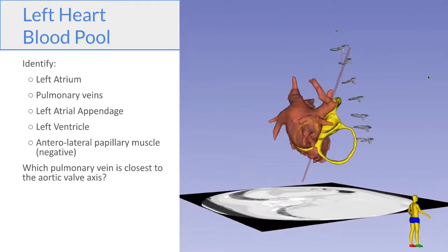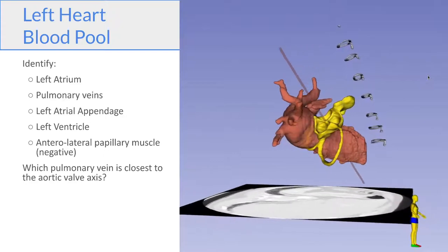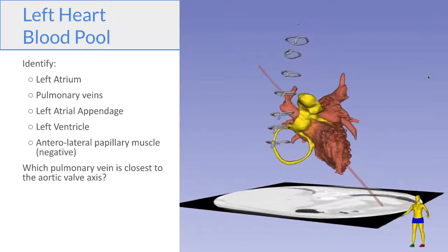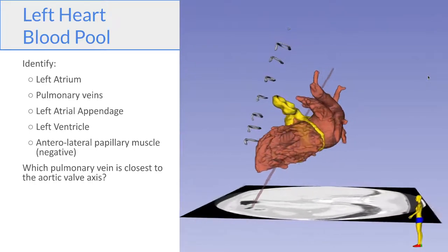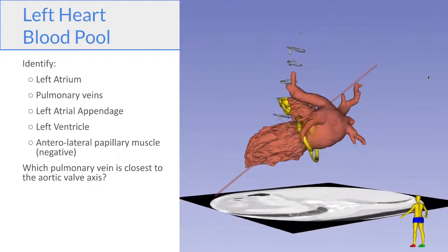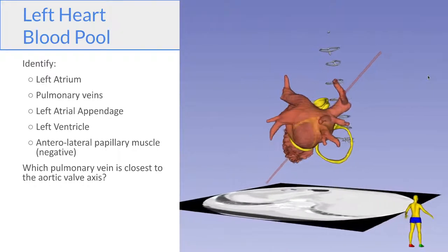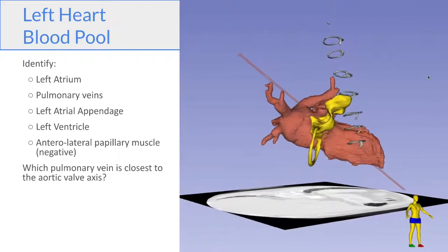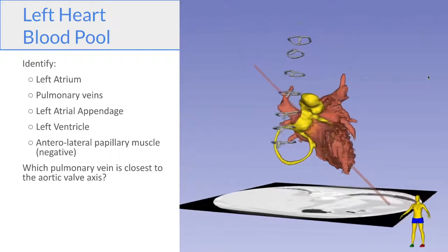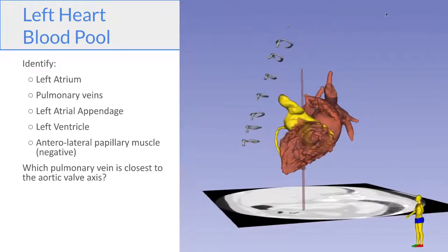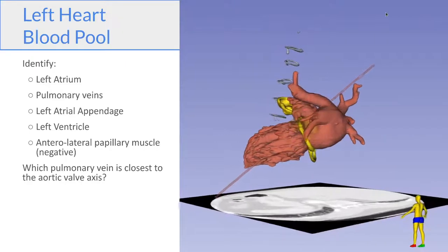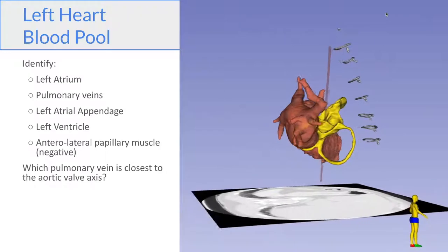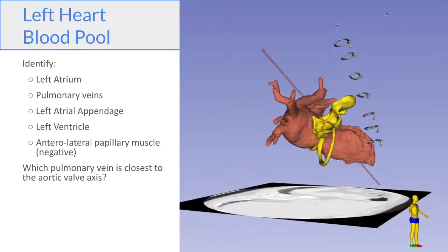Now we start adding all the other cardiac structures. So here we've added the left heart blood pool. So try to identify the left atrium and the pulmonary veins, see if you can identify the left atrial appendage, the left ventricle, and the cavity in the blood pool that corresponds to where the anterolateral papillary muscle would be. And one question is, which pulmonary vein is closest to the aortic valve axis? You can see the left atrial appendage coming and going out of the view there, and you can see that the right upper pulmonary vein is the one that comes closest to the aortic valve axis.